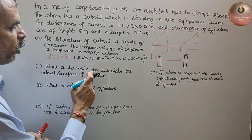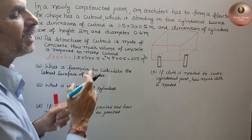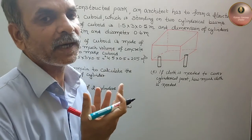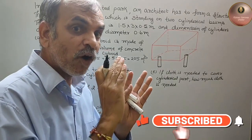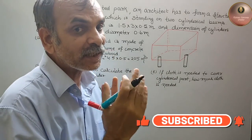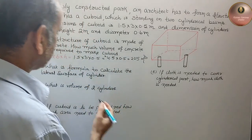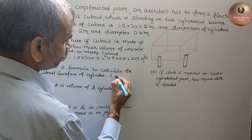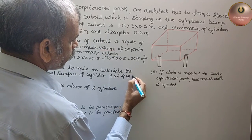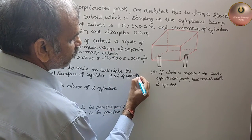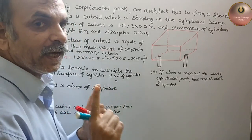Next, what is the formula to calculate the lateral surface of a cylinder? The lateral surface — four walls, or you can say CSA of a cylinder. So the CSA of a cylinder formula is 2πrh.